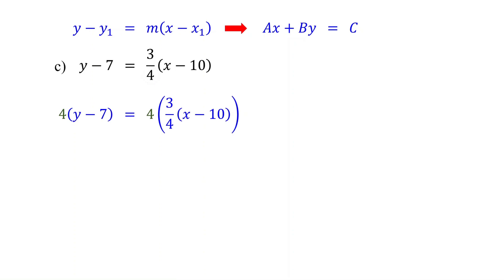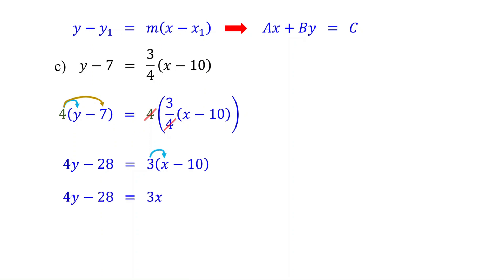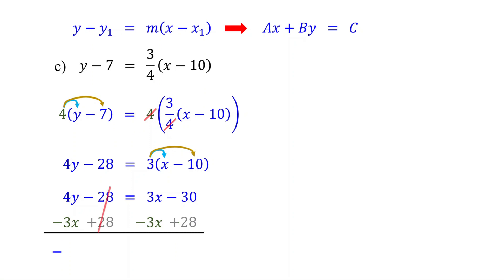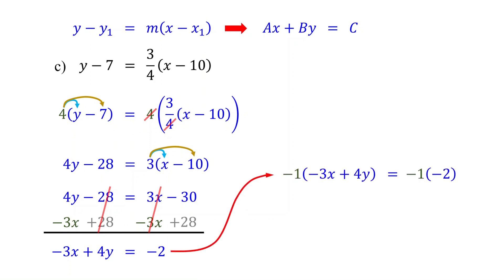On the left, distribute the 4. On the right, the 4s cancel, leaving 3 times X minus 10. Next, distribute the 3. Then subtract 3X from both sides and add 28 to both sides. On the left, these cancel, leaving negative 3X plus 4Y. On the right, these cancel, leaving negative 30 plus 28, which equals negative 2. Finally, make the X coefficient positive by multiplying both sides of the equation by negative 1 — just change the sign of each term. Your equation is now in standard form.